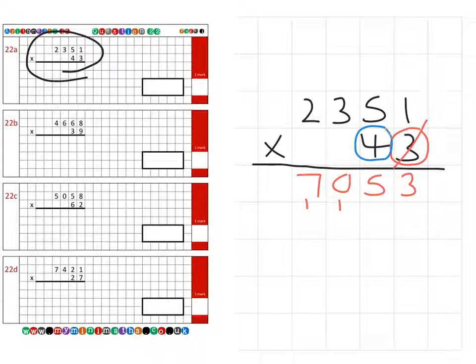Next we look at the tens column, and for this we place a magic 0 in the units column, which makes everything 10 times larger because actually this is a 40, not just a 4. So 4 times 1 is 4, there's our 40. 4 times 5 is 20, carry that 2 over. 4 times 3 is 12 plus the 2 is 14. 4 times 2 is 8 plus the 1 is 9.